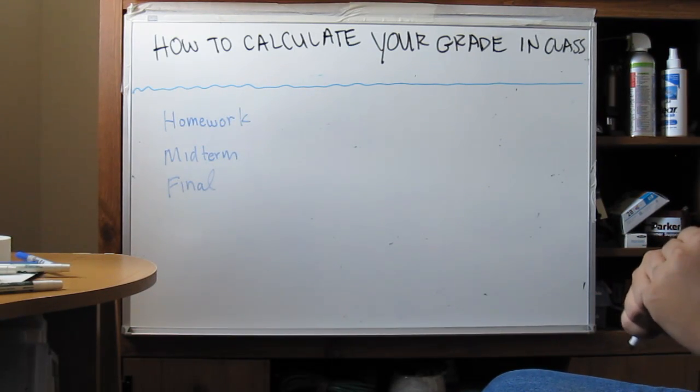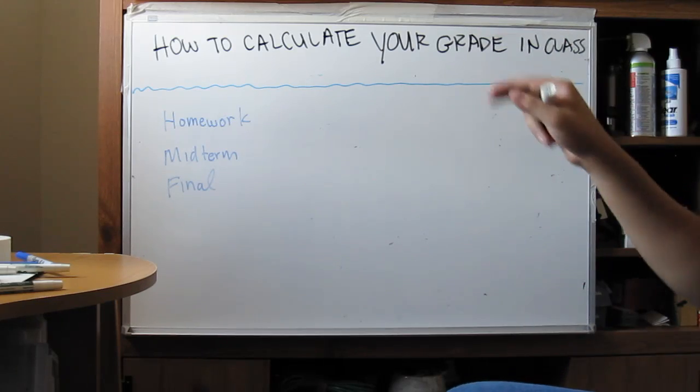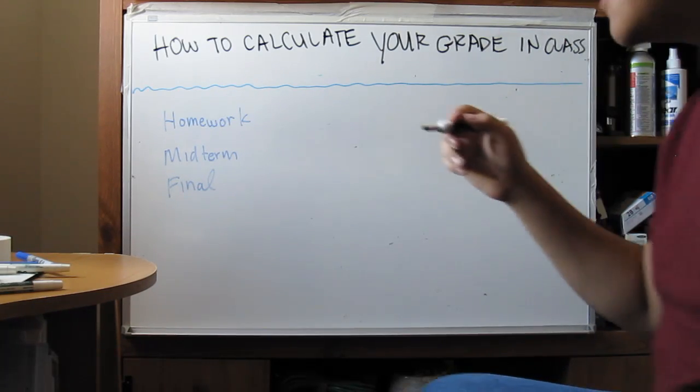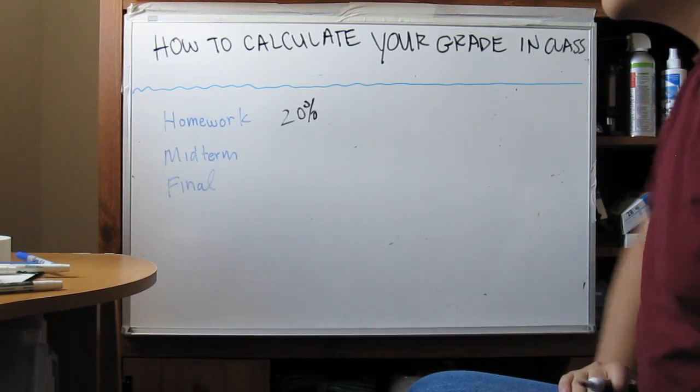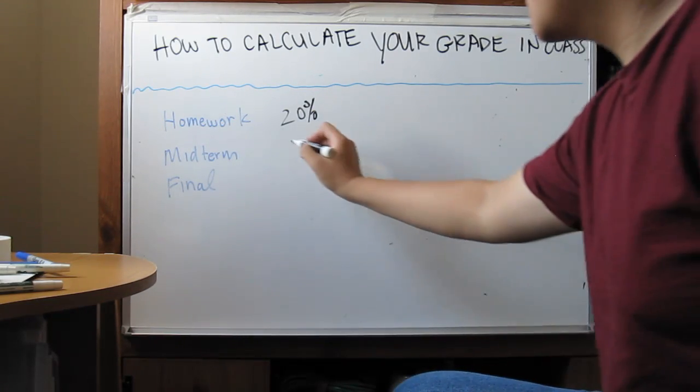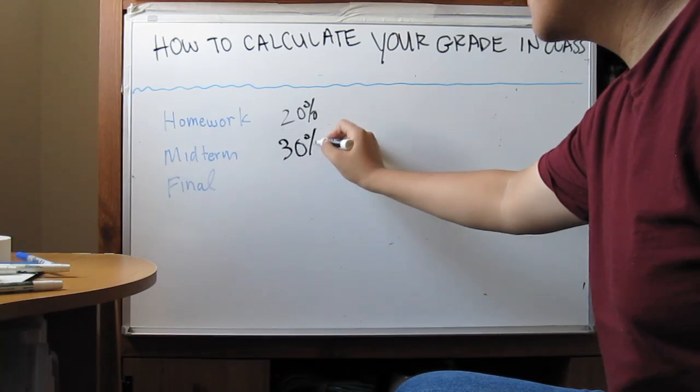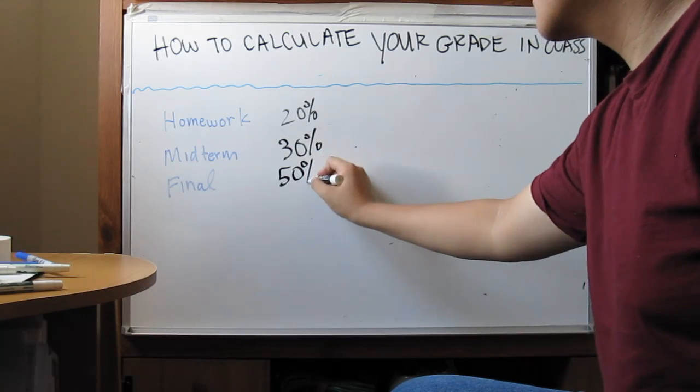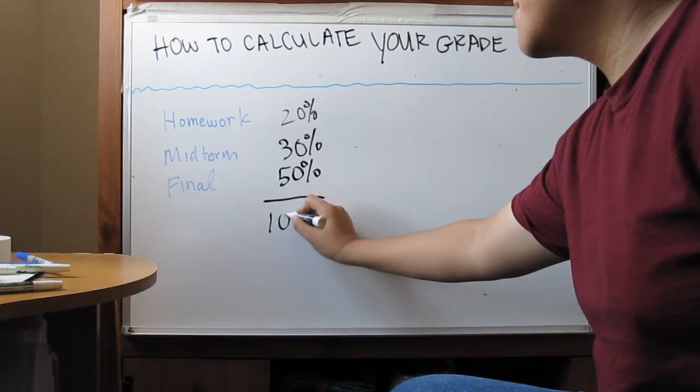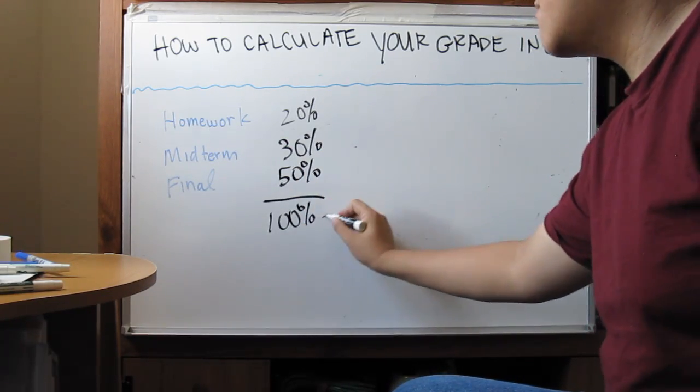Let's say for instance that these are broken down into percentages, meaning your homework is worth 20% of your grade, midterms are worth 30% of your grade, and the final is worth 50% of your grade. And this comes out to 100%, or an A+.